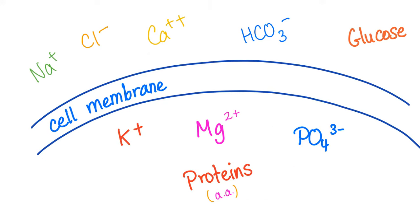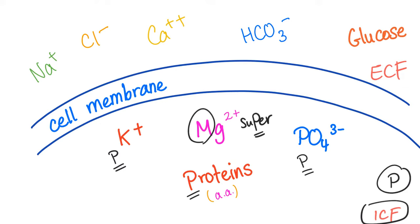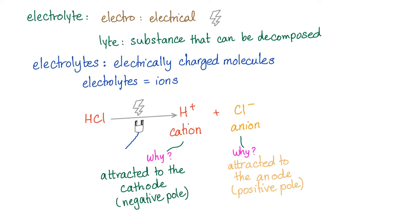Electrolytes or ions — some are more prevalent in the extracellular fluid, others inside the cell. Here's a mnemonic: if it starts with a P, it's more prevalent in the intracellular fluid. Potassium starts with P, phosphate starts with P, proteins start with P. For magnesium, I invented something: magnesium is released from supernova explosions and was also used in old flash photography.